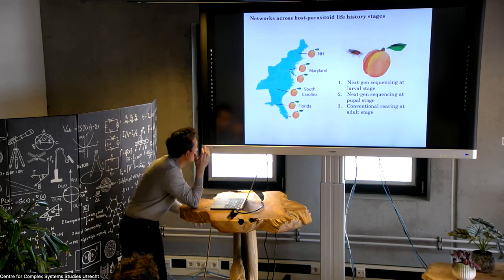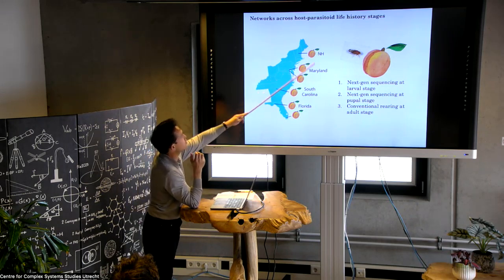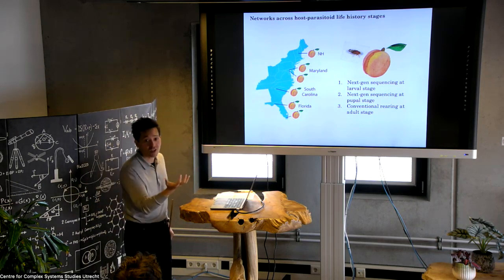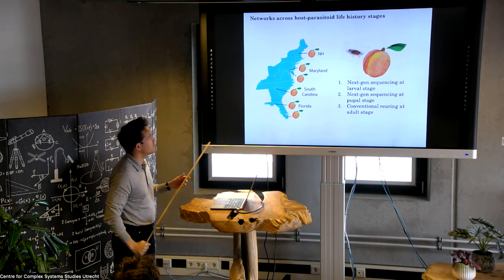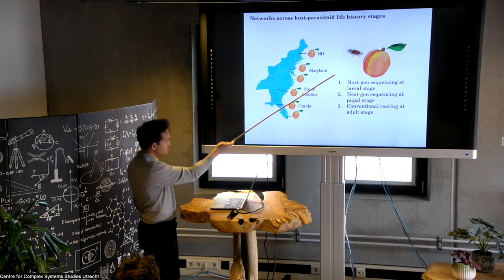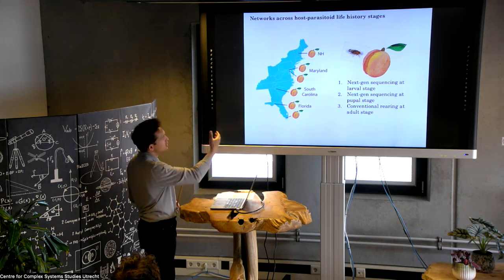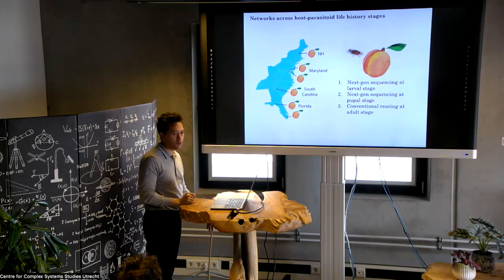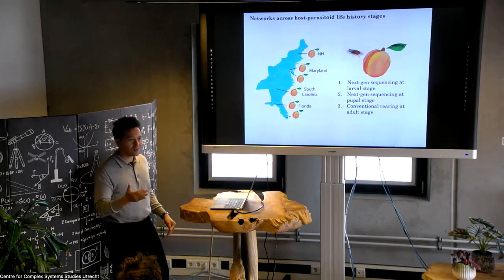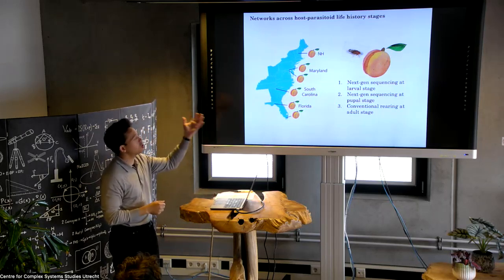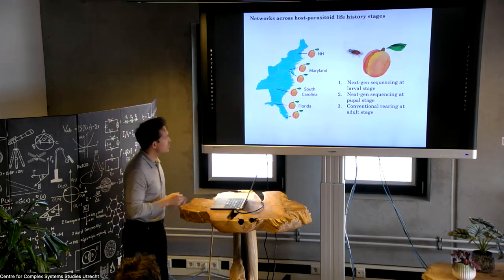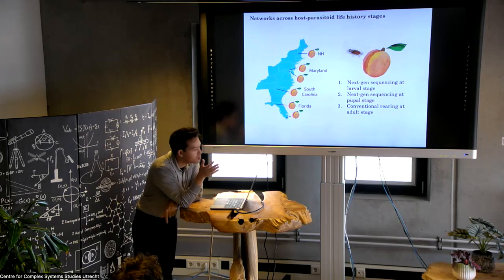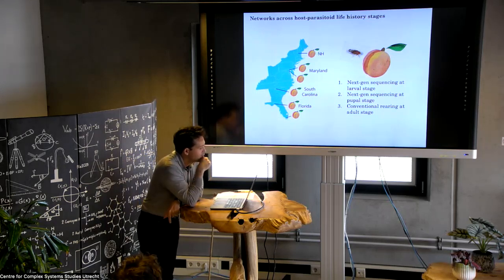In practice, our plan is to go across the eastern seaboard of the US — New Hampshire, Maryland, South Carolina, and Florida — lay out peach traps, since we're studying fly hosts that lay their eggs in rotten fruit. We'll collect the peaches and at the larval and pupal stages perform next-generation sequencing to identify the host and the parasitoid. This can be done much, much quicker than conventional methods — it's really impossible to do without next-generation sequencing. For the third adult stage, we'll still bring samples in and rear them in the lab conventionally, as that's still the most efficient approach.